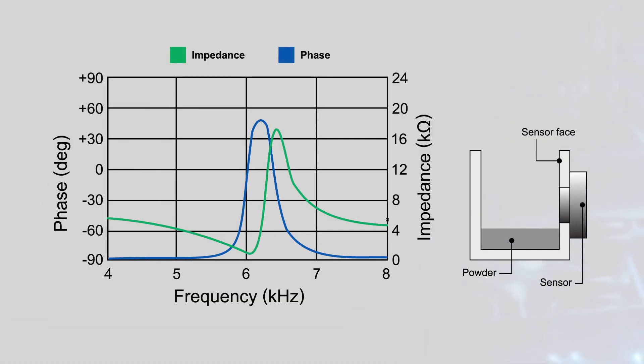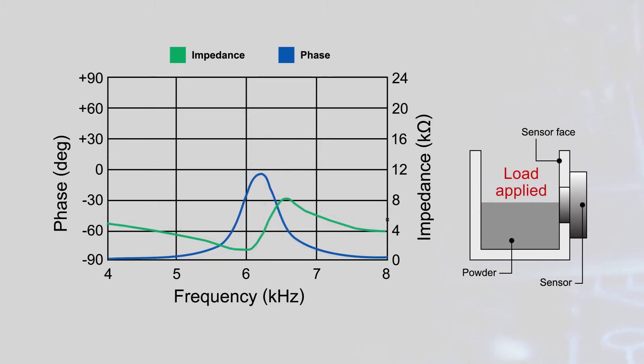As powder contacts the sensor face, it changes the sensor's characteristic impedance versus frequency, becoming more capacitive as the load on the face increases. The powder level can then be determined by checking the phase of the sensor's impedance. This sensing technique also allows the sensor to detect both magnetic and non-magnetic powders.